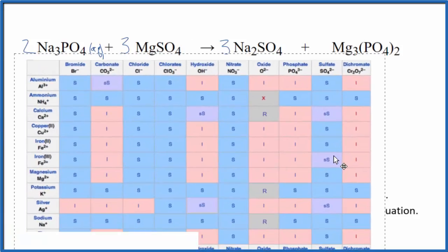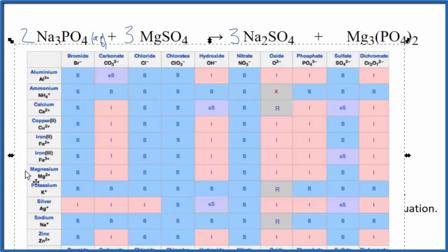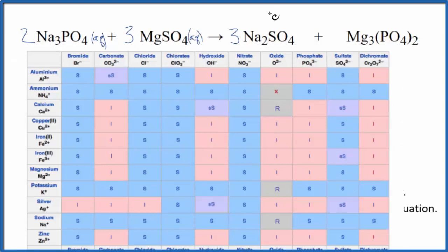So we have a solubility chart here. So we find magnesium. Here's magnesium. We go over, and here's the sulfate. So that S means it's soluble. It'll dissolve in water. So we'll write AQ.